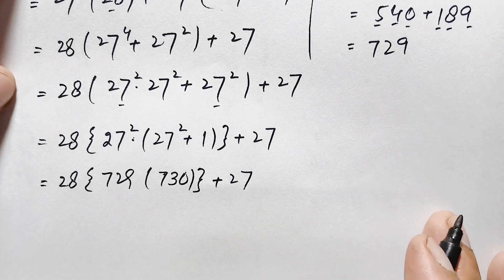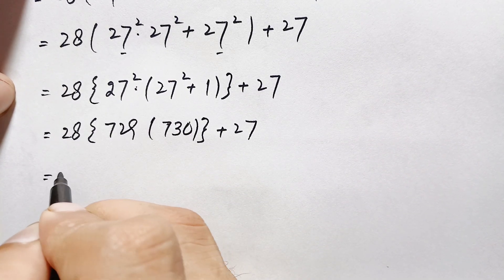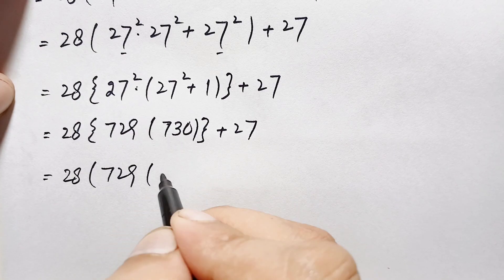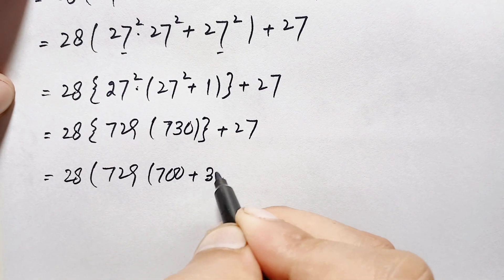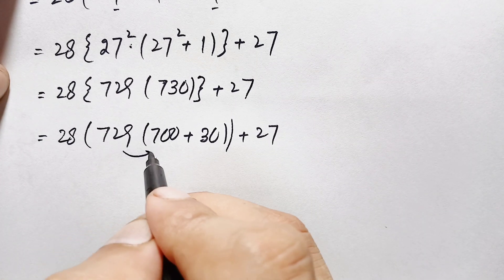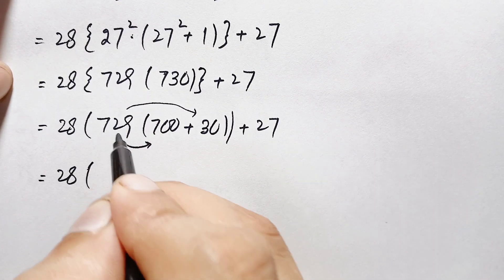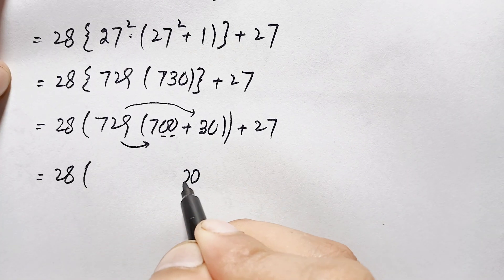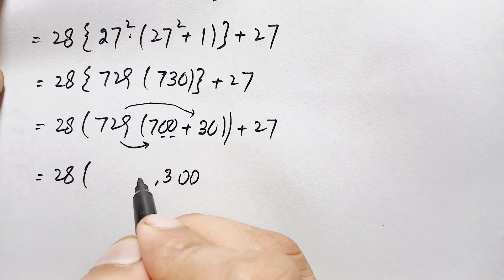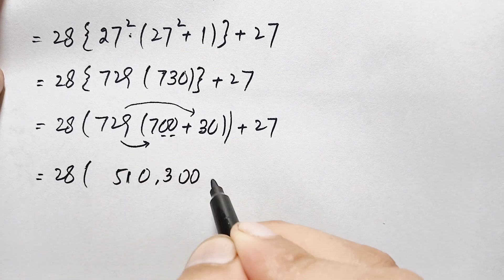Next, to multiply 28 times 730 plus 27, we first need to handle 28 times 730. We can break this down: 730 is 700 plus 30. Multiplying 729 — wait, multiplying 28 by 700: 28 times 7 is 7 times 9 is 63, carry 6; 7 times 2 is 14 plus 6 is 20, carry 2; so 1 times 7 is 7 plus 2 is 9, giving 19,600.